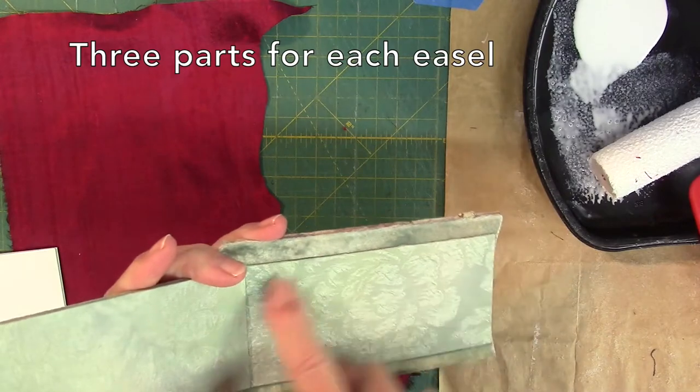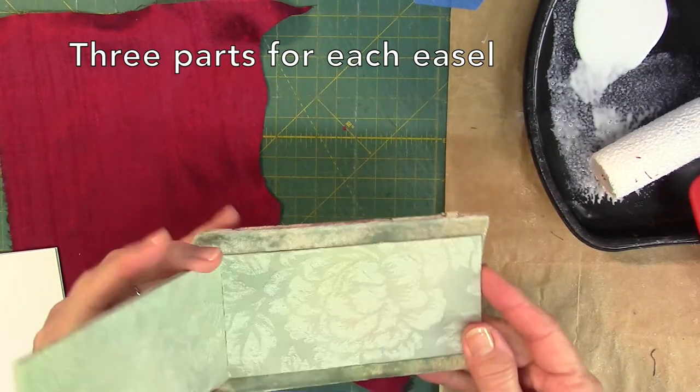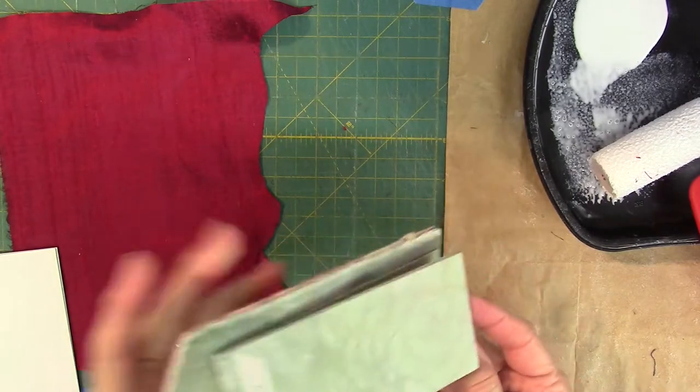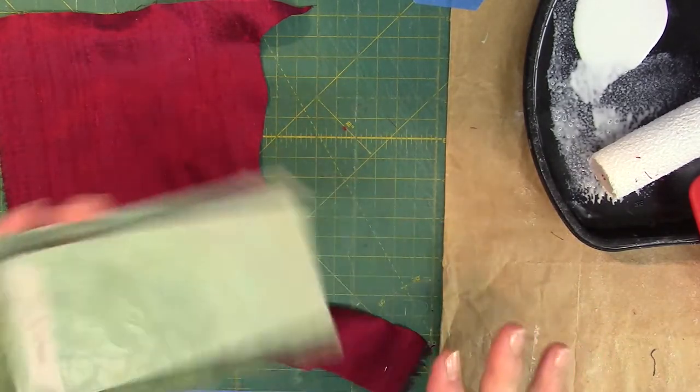There are three parts to the easel. One part sits against the banner back, and it combines with a second piece to create the easel action. The third piece is a clean-up piece.